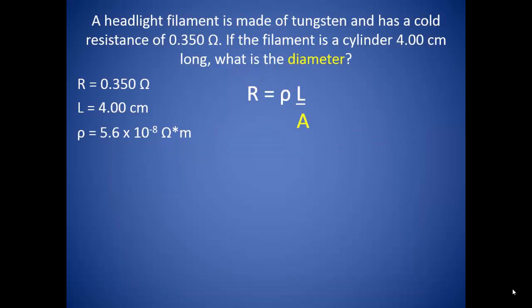Suppose a headlight filament is made of tungsten and has a cold resistance of 0.350 Ω. If the filament is a cylinder 4.00 cm long, what is the diameter? Let's see, we know the resistance and the length of the wire, and we can look up the resistivity.